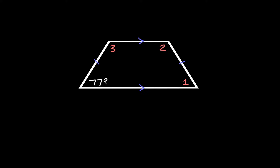We're given one angle of 77 degrees and we're trying to figure out what these three angles are. An easy place to start is by pointing out that all base angles are congruent. That means this acute angle is equal to this acute angle, and this obtuse angle is congruent to this obtuse angle. The acute angles are the exact same and the obtuse angles are the exact same.